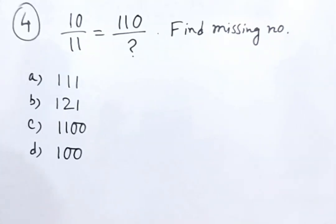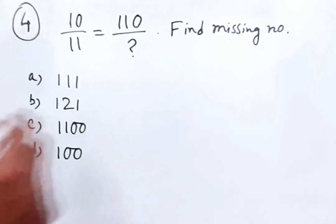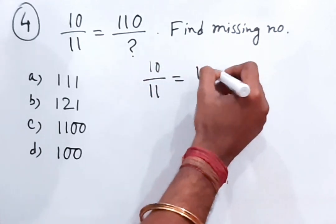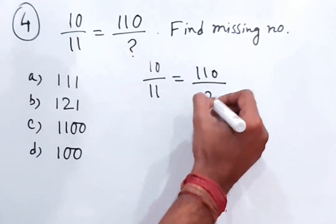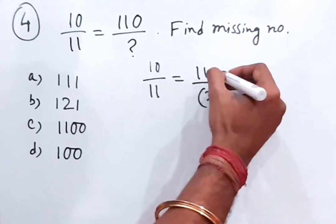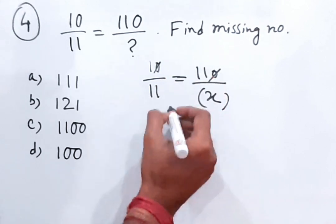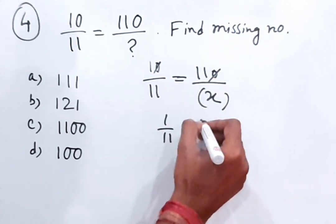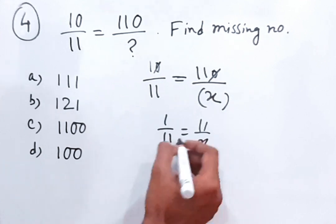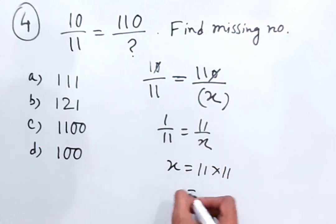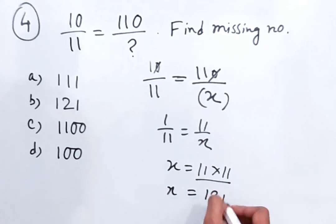Now, 10/11 = 110/? — find the missing number. So 10/11 = 110/x. We can cancel a zero from both numerator terms, giving 1/11 = 11/x. Cross multiplication gives x = 11 × 11 = 121. So 121 is the answer.